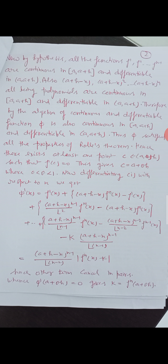Thus φ satisfies all the properties of Rolle's theorem. Hence there exists at least one point c in (a, a+h) such that φ'(c) = 0. This gives c = a + θh, where 0 < θ < 1.